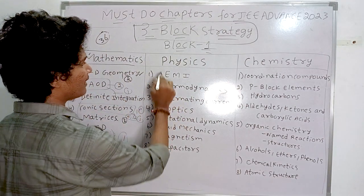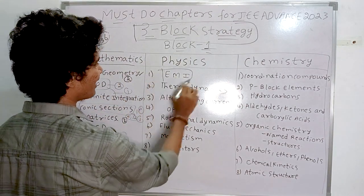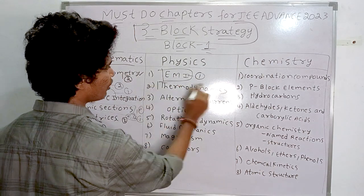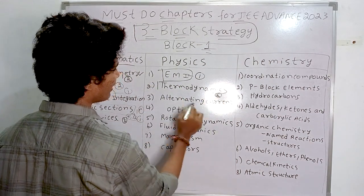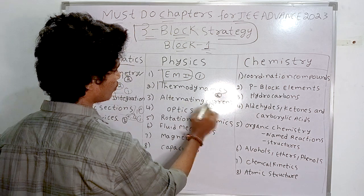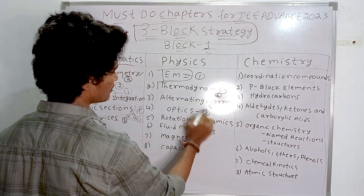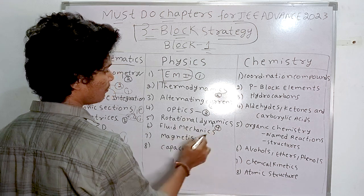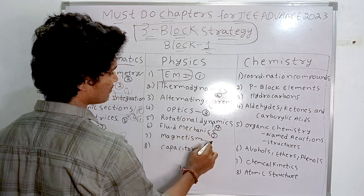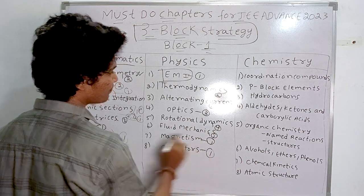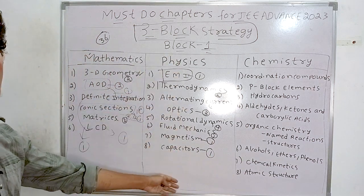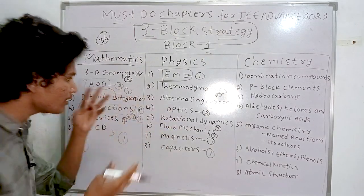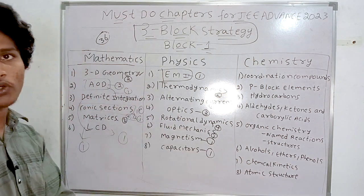In physics, from block one: EMI (electromagnetic induction) — one question; thermodynamics — two questions; alternating current — one question; optics — three questions; rotational dynamics — four questions; fluid mechanics — one question; magnetism — one question; capacitors — one question. These are the actual questions I received in JEE Advanced 2022.